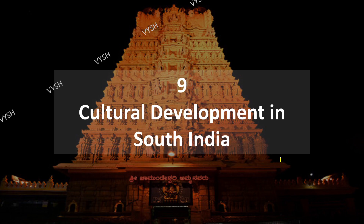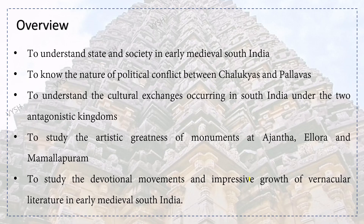We shall start chapter number 9: Cultural Development in South India. The overview includes: to understand state and society in early medieval South India, to know the nature of political conflict between Chalukyas and Pallavas, to understand cultural exchanges occurring in South India under two antagonistic kingdoms, and to study the artistic greatness of monuments at Ajanta, Ellora and Mamallapuram, as well as devotional movements and the growth of vernacular literature.